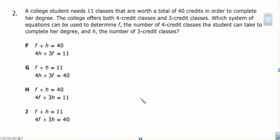Number two: a college student needs 11 classes that are worth a total of 40 credits in order to complete her degree. The college offers both 4-credit classes and 3-credit classes. Which system of equations can be used to determine f, the number of 4-credit classes a student can take, and h, the number of 3-credit classes? Well, they just told us that f classes are worth 4 hours. 3-credit classes, h. And then that's supposed to total 40 credits.